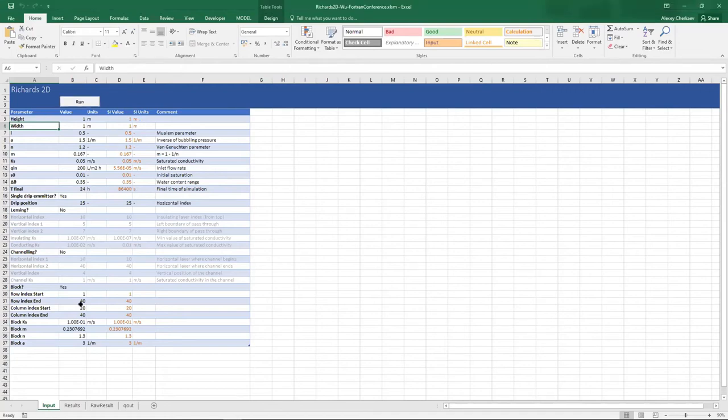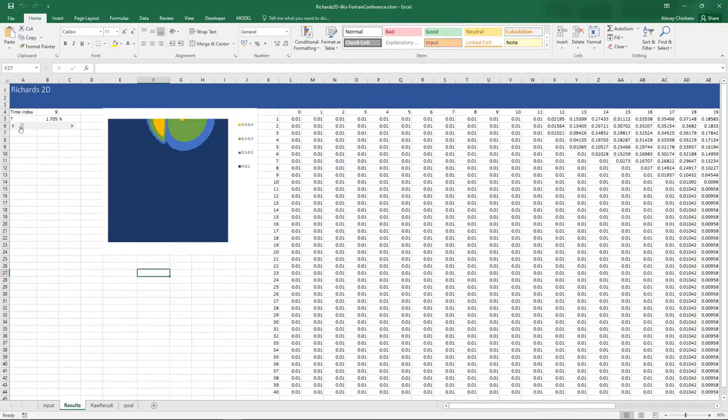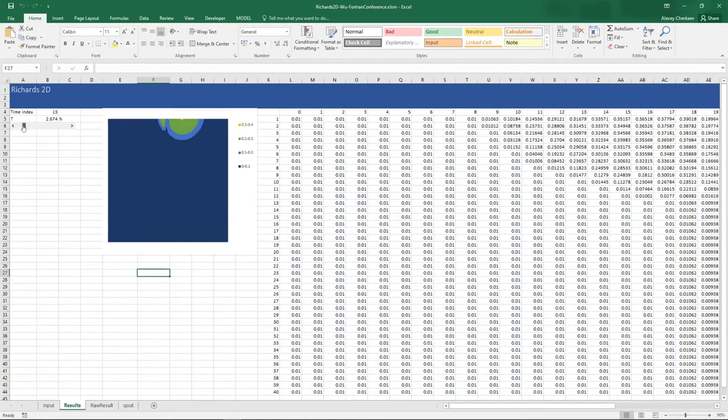So the model finished running. Half of the time that it actually runs, it actually takes for Excel to recalculate everything once the data gets loaded in the spreadsheet. And I go to results, and that's what we're going to start seeing here. So what do we have here? This is the dark blue color. This is the domain. And slightly to the right of the center, there is a drip emitter that introduces liquid. The domain starts quite dry.